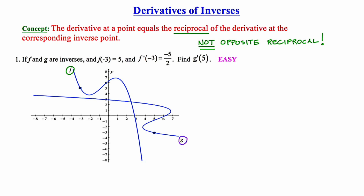Reading the question again from the beginning, we note that f and g are inverses — that's a really important relationship. Next, f of negative 3 equals 5, which means on the graph of f there exists the point negative 3, 5. The derivative at negative 3 is negative 5 halves, meaning the tangent line to the graph of f at negative 3 has a slope of negative 5 halves. I'll go ahead and draw that tangent line in.